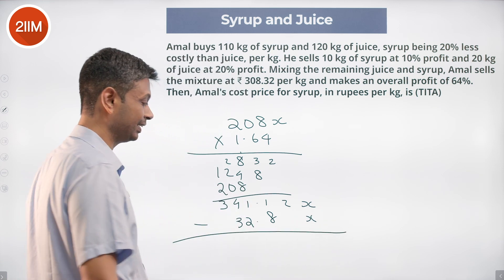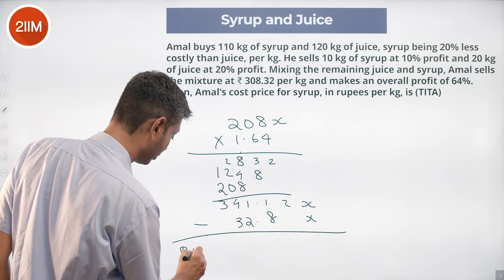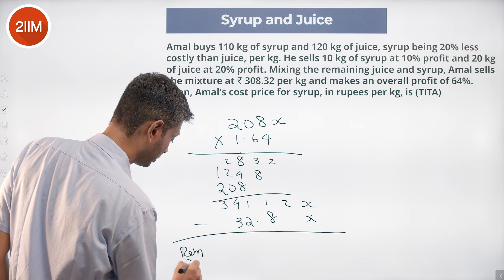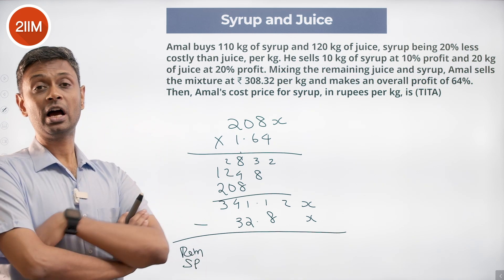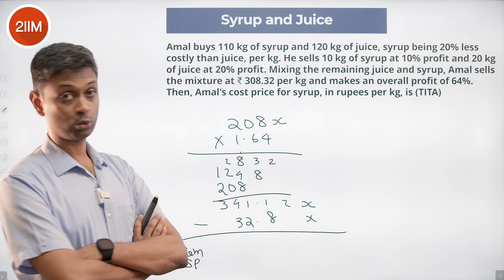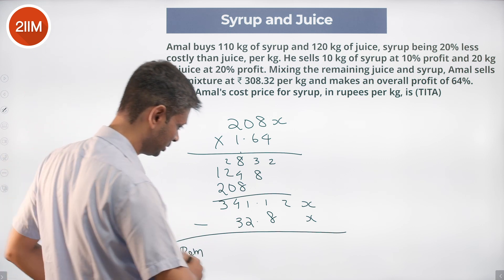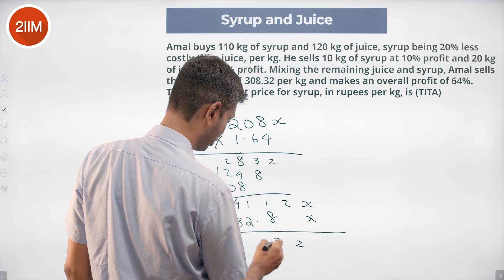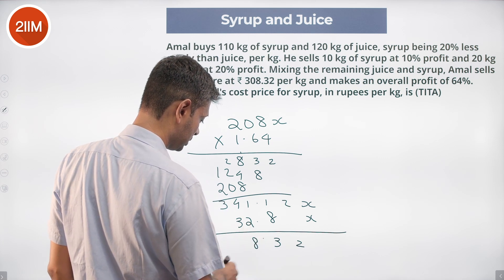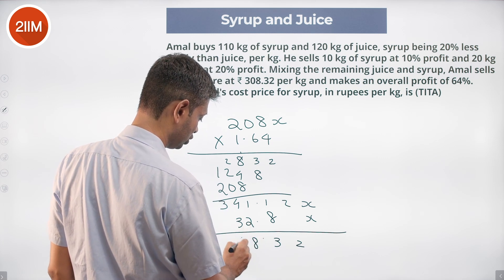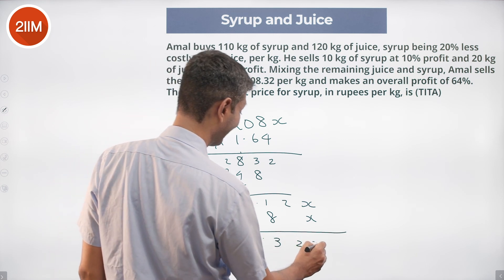The remaining amount is for 100 kg of syrup and 100 kg of juice. Subtracting 32.8X from 341.12X: 341.12 minus 32.8 gives 308.32X. So the selling price for the remaining mixture is 308.32X.